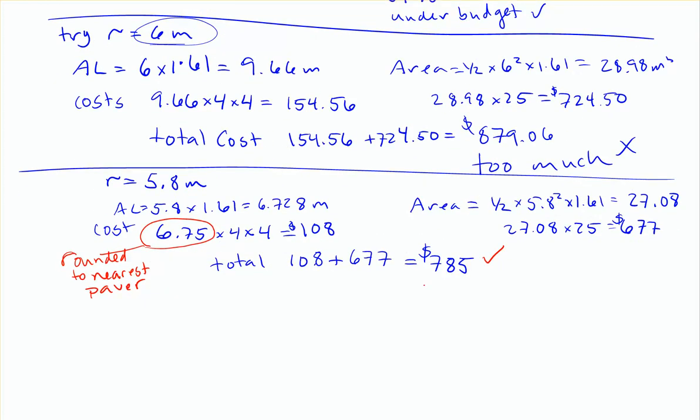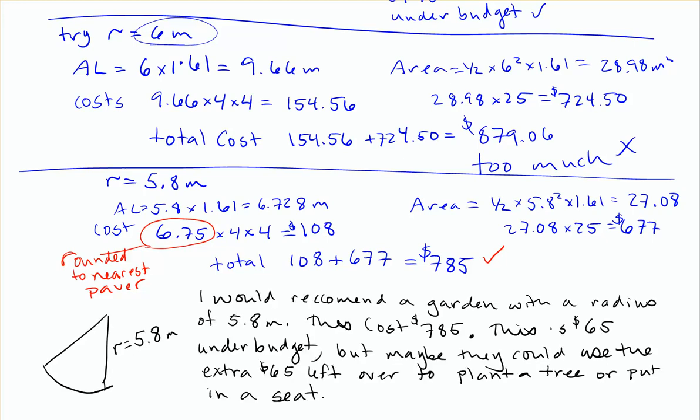if I was going to leave this as my answer, maybe something that I would do to finalize it here is you've really got to put it into words. So I'd say something like this. I'll probably pause and write it out first. So what I've said here is I would recommend the garden with a radius of 5.8 meters. This cost $785. This is $65 under budget, but maybe they could use the extra $65 left over to plant a tree or to put in a seat.